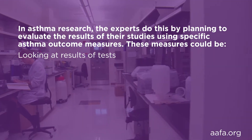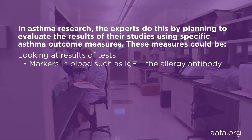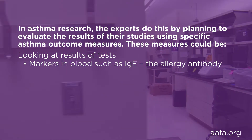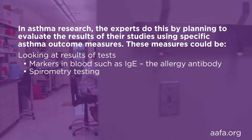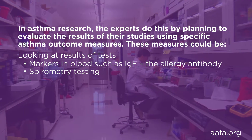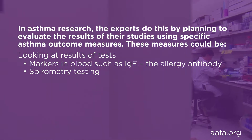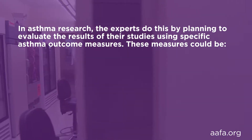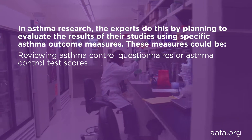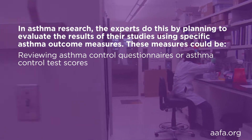These measures could be looking at results of tests, like markers in the blood, such as immunoglobulin E, IgE. Spirometry testing, which is a type of lung test that measures the amount of air that you're able to breathe in and out. Measures also could be reviewing asthma control questionnaires or asthma control test scores.